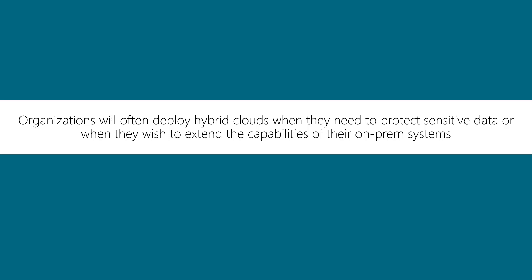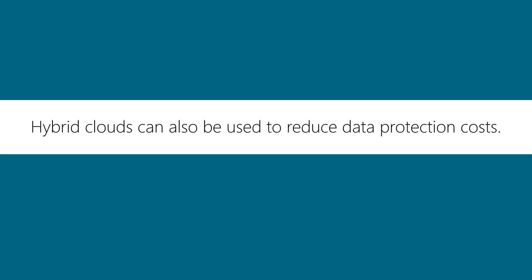For example, an organization that needs to run an application that will only run on an older OS or older hardware might opt to keep the old system running locally but connect it to the public cloud for authorization or for storage. Hybrid clouds can also be used to reduce data protection costs. For example, if your organization needs to deploy a PKI or an information rights management infrastructure to protect its data, the cost of doing so locally could be quite high. However, enabling these features from the cloud allows you to protect both your cloud and on-prem data and documents.